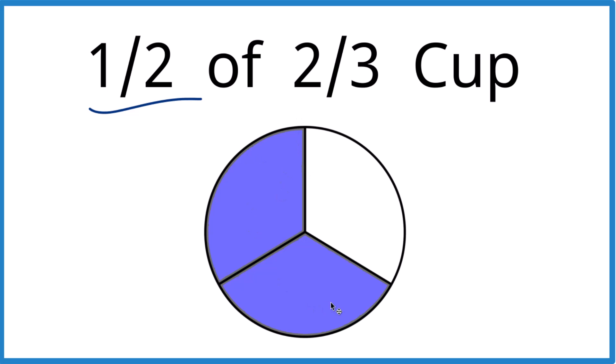So we want to take half of the shaded in area which is two-thirds. There's half of it and half of it is just one-third. So half of two-thirds a cup is just a third. You can see it right there.